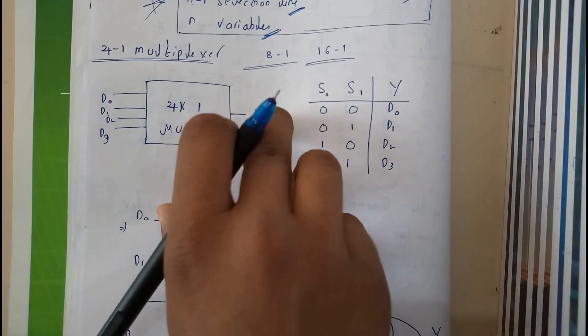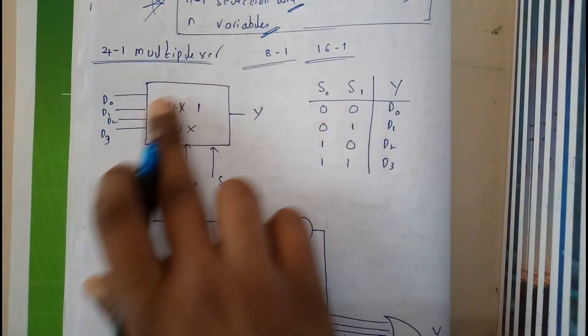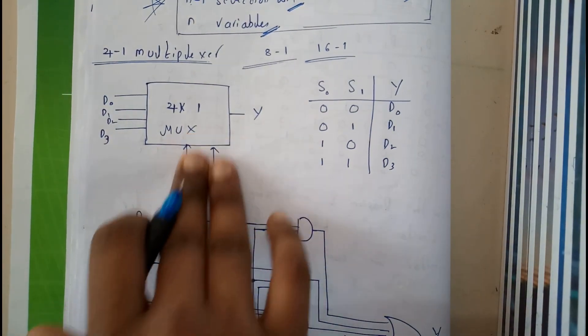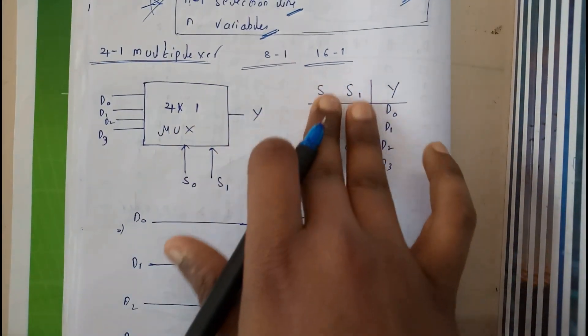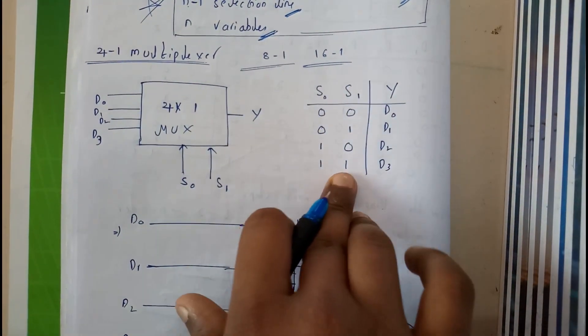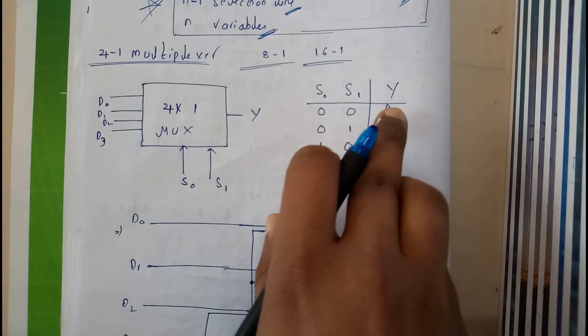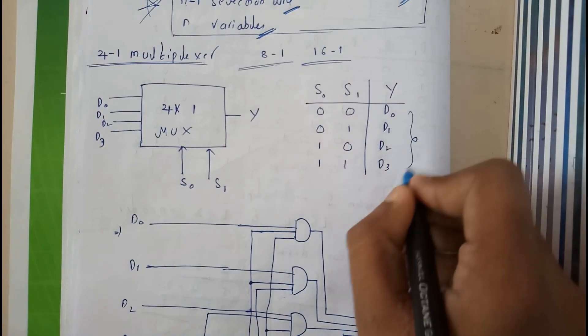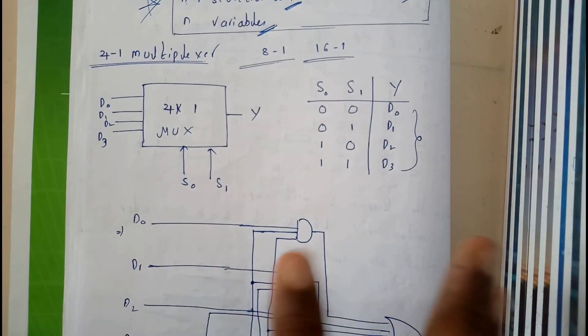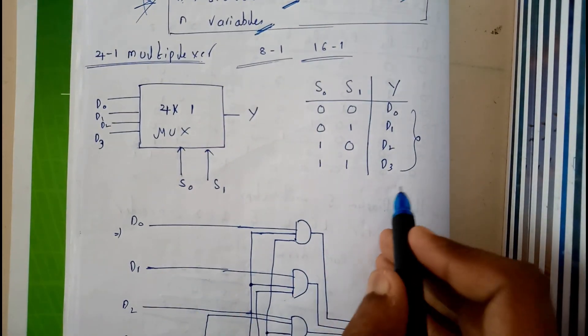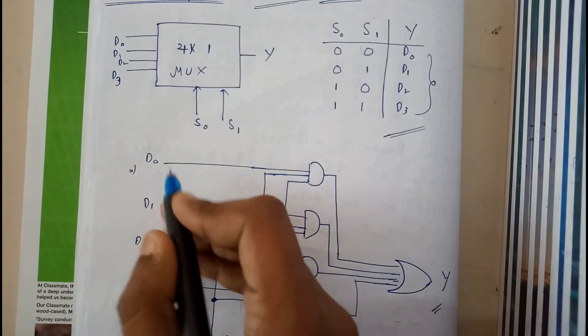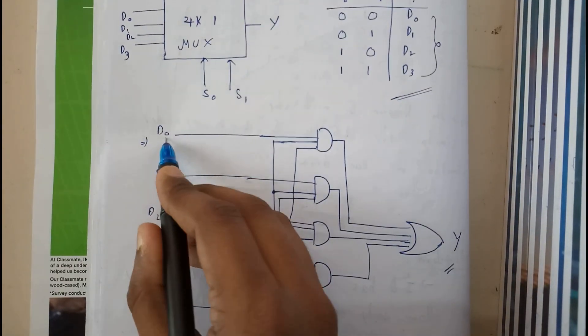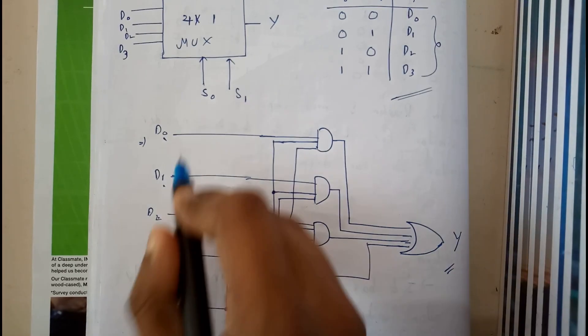I hope everyone is clear with this diagram. Basically we are having 2 selection lines. These 2 selection lines will give 4 combinations. Initially I'll be assuming them as d0, d1, d2, d3. So here we got 4. Once we are done with this, we'll be directly going into the diagram, which is we'll be drawing d0, d1, d2, d3.